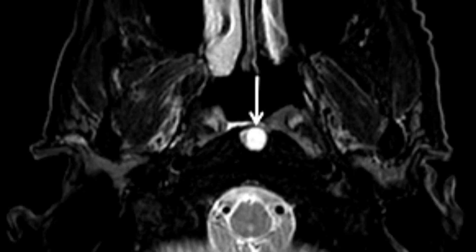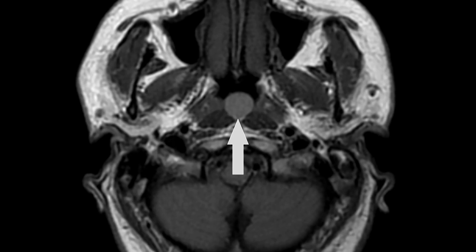On MRI, a Tornwalt cyst appears as a well-defined round or oval midline lesion in the posterior nasopharyngeal wall, just superior to the adenoids and inferior to the clivus. It typically shows high signal intensity on T2-weighted images and variable signal on T1.